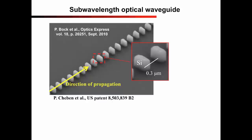In 2010, we developed at NRC Canada the first subwavelength optical waveguide. The waveguide consists of an array of about 150 nm long silicon segments, as we see in this image from the scanning electron microscope.